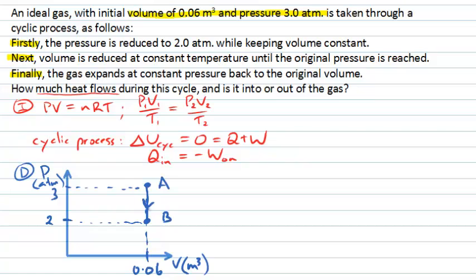The next step is to go at constant temperature until we get back to the original pressure of 3 atmospheres. We travel from B up to that pressure at constant temperature. For an ideal gas, if temperature is constant then pressure times volume must remain constant, so the line we follow is a hyperbola. We move to a state C that has the same pressure as our initial state A. It's useful to determine what the volume at state C will be.